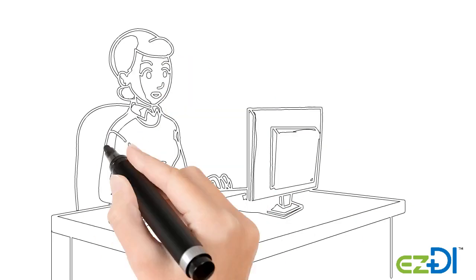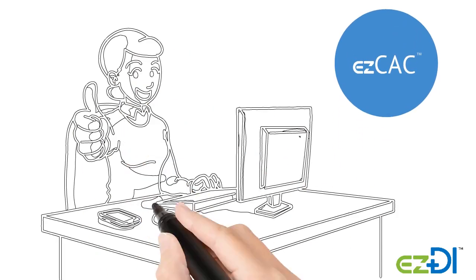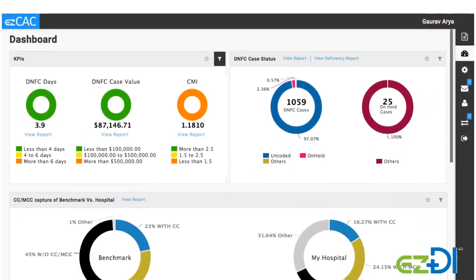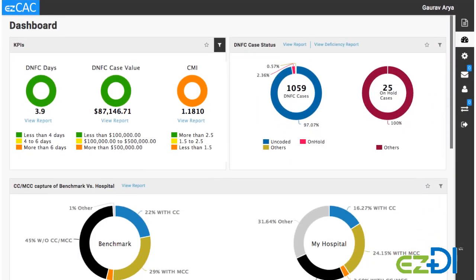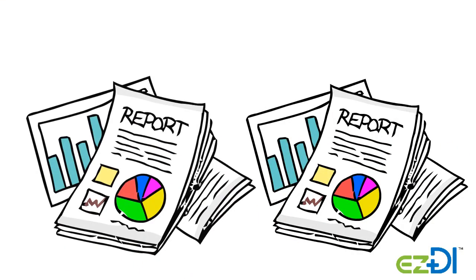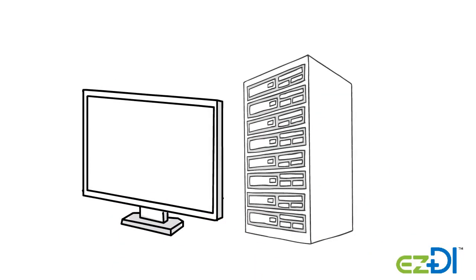Determining what's preventing cases from being fully coded and correctly billed is frustrating, but Easy CAC makes it easy to see actionable metrics. Easy CAC provides real-time dashboards for various KPIs, meaning you don't have to create and maintain multiple manual spreadsheets for tracking and reporting purposes, or pay handsomely for additional technology and consulting services.